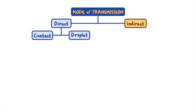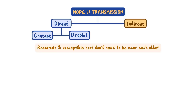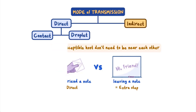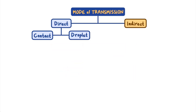For indirect transmission to occur, the source or reservoir and susceptible host don't need to be near each other, and it does not have to happen immediately. You can think of this as the difference between directly handing your friend a note in person or indirectly leaving a note on the dry erase board for them to read later. Your friend gets the message from you either way, but one is direct and one has a little extra step. There are three types of indirect transmission, and they're categorized by the extra step involved.